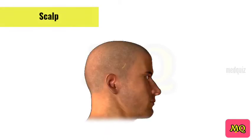The scalp refers to the layers of skin and subcutaneous tissue that cover the bones of the cranial vault. Let's see the layers and neurovascular supply of the scalp, and clinical correlations related to the scalp.